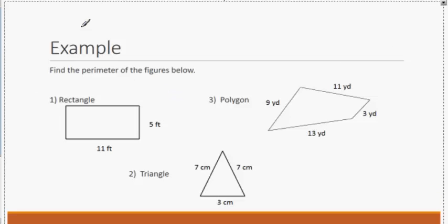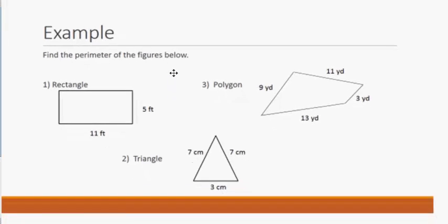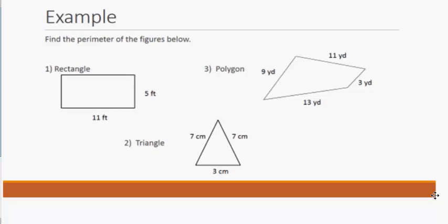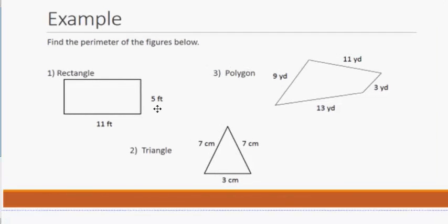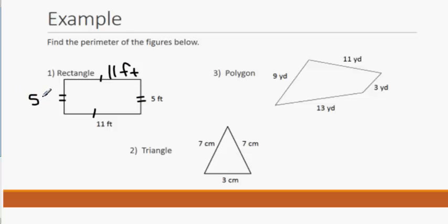So here we have a couple of examples. We're asked to find the perimeter of a rectangle, a triangle, and a polygon. Here's our rectangle. If you notice, only two of the sides are labeled. But if you remember, a rectangle has opposite sides that are congruent. So this is also going to be 11 feet, and this side is also going to be 5 feet.